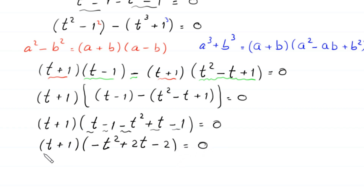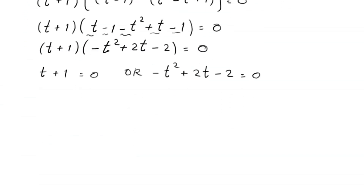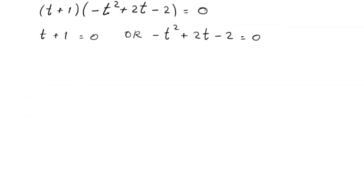From here, either (t plus 1) equals 0, or (negative t squared plus 2t minus 2) equals 0. From the first equation, we get t equals negative 1. This is the first solution of this equation. To find the other two solutions, we solve the quadratic equation.